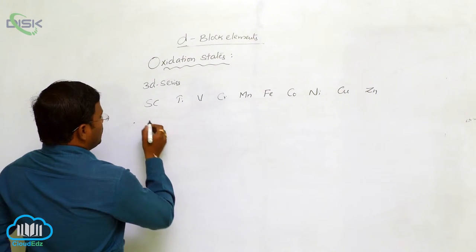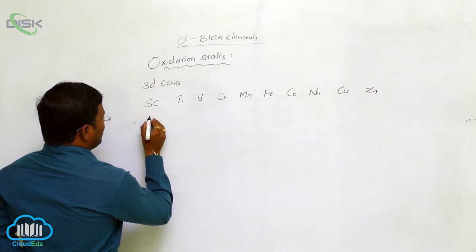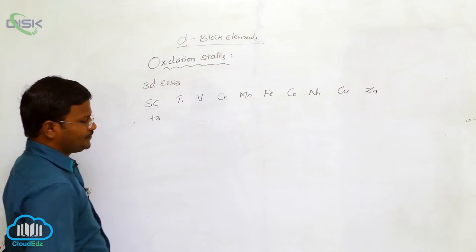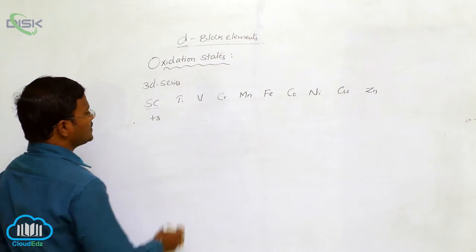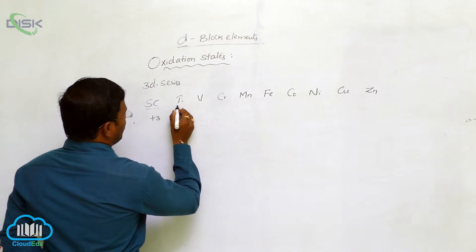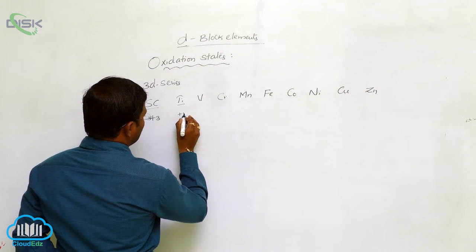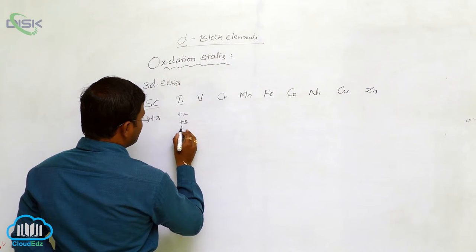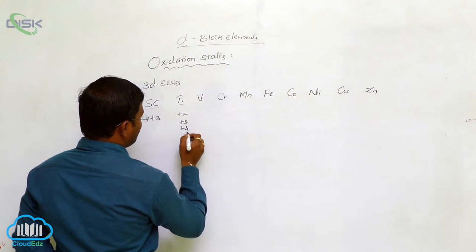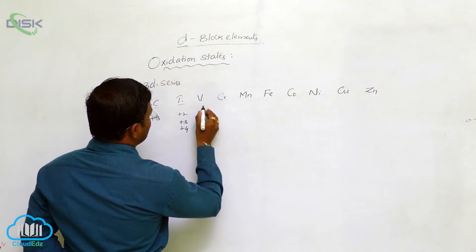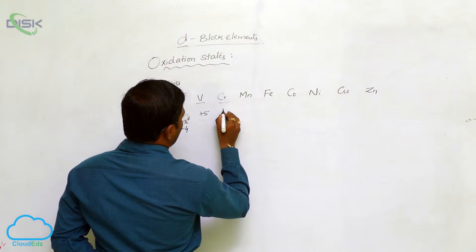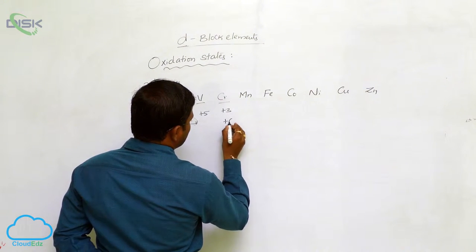The general oxidation states of titanium are plus 2, plus 3, and plus 4. For vanadium, plus 5. For chromium, plus 3 and plus 6. These are the most important oxidation states.